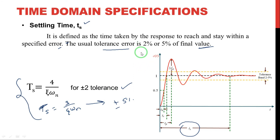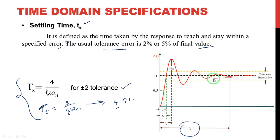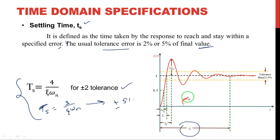These are the basic definitions of time domain specifications. By knowing all these time domain specifications clearly, we can reduce the transient response using controllers. Thank you for watching this video. If you have any doubt, please comment in the comment box.